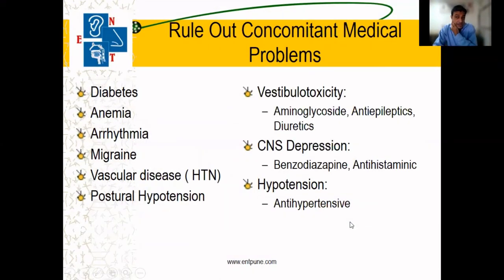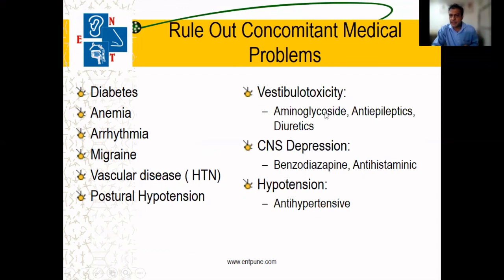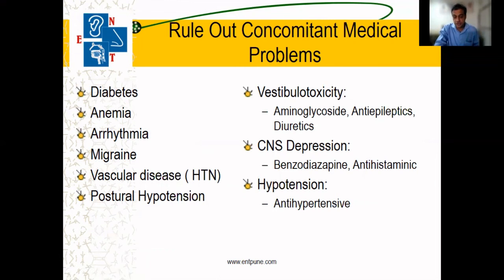All vertigo patients need systemic conditions ruled out — diabetes, anemia, heart conditions, migraine, vascular disease like hypertension, and postural hypotension. It is important that patients should not be on any major ototoxic drugs, antidepressants, or hypotensive medications.